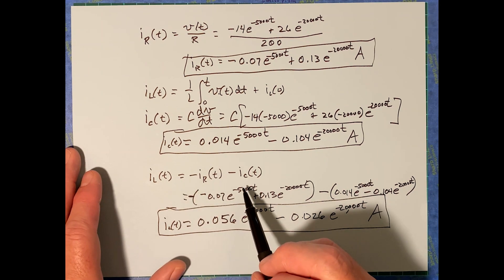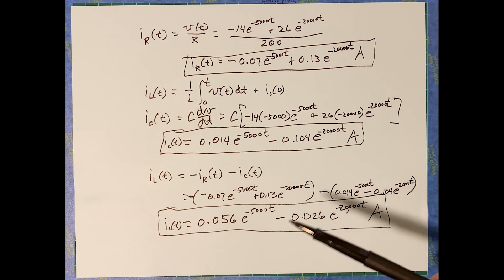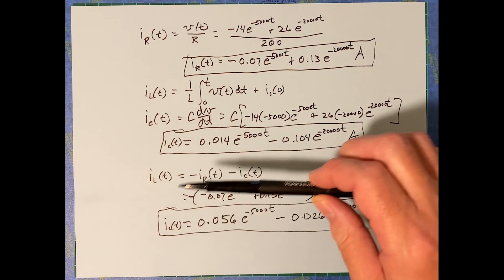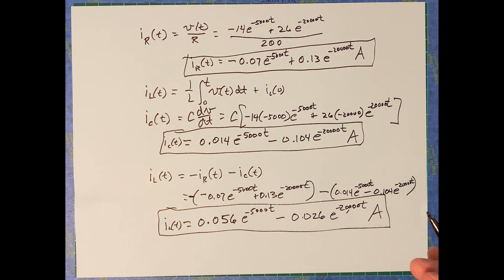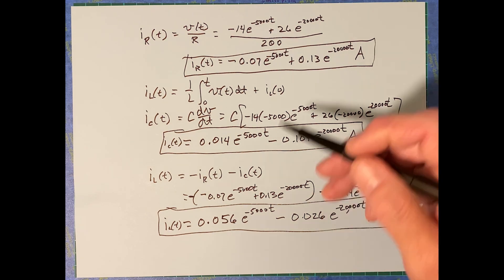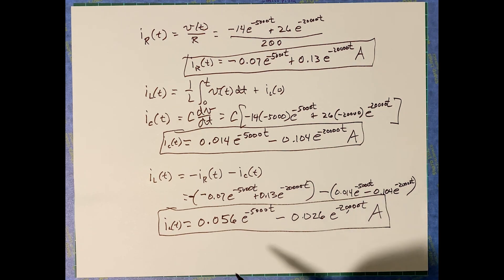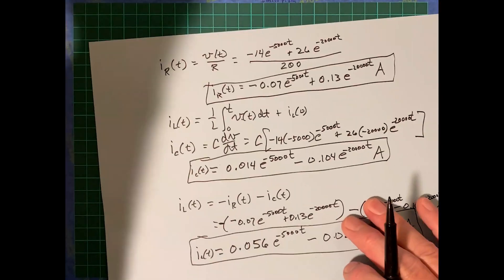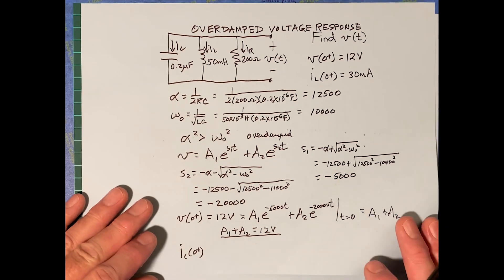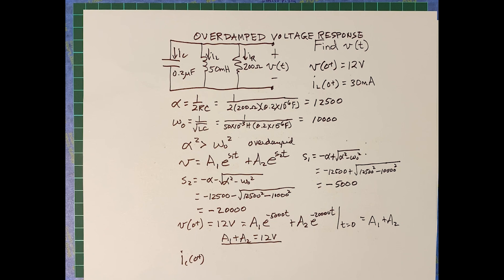So if you have two of the currents you can get the third using KCL. We've figured out the currents and the voltage. From these you could also find the power dissipated by the resistor, the energy stored in the inductor, or the energy stored in the capacitor — all as time-varying functions. That completes the natural response for the overdamped parallel RLC case. The next video will cover the underdamped case.